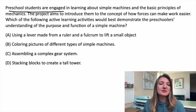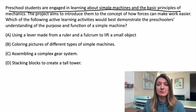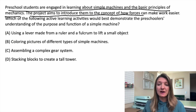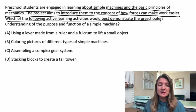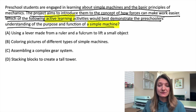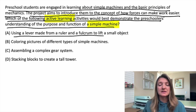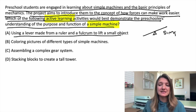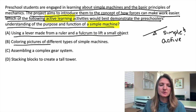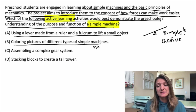Question three. Preschool students are engaged in learning about simple machines and the basic principles of mechanics. The project aims to introduce the concept of how forces can make work easier. Which of the following active learning activities would best demonstrate the preschooler's understanding of the purpose and function of a simple machine? We're looking for active learning with simple machines. Option A: using a lever made from a ruler and a fulcrum to lift a small object — a simple machine, an active project, and appropriate for preschoolers. Option B: coloring pictures of different types of simple machines — not really an active project.